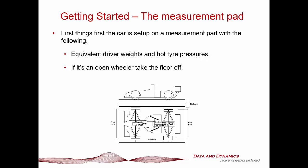Getting started, what you're going to need is a measurement pad. Here are some really critical things: you've got to get the equivalent driver weights and hot tire pressures, that's very key. If it's an open wheeler, take the floor off. If you've got the engine and transmission out, you can actually just grab some tire wraps and strap the car down front to rear to make sure that you've got the equivalent weight distribution.